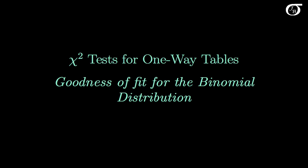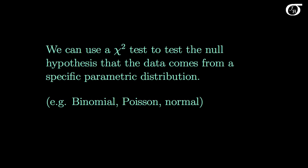Let's look at chi-square goodness-of-fit tests for the binomial distribution. We can use a chi-square test to test the null hypothesis that the data comes from a specific parametric distribution — for example, whether the data comes from a binomial or Poisson distribution, or even a continuous distribution such as the normal distribution.